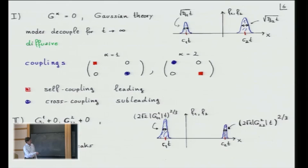The claim is that in this case, when I look at sufficiently large times, it will decouple — but now into two independent Burgers equations. The cross couplings are sub-leading. If the diagonal entries are different, the claim is two KPZ peaks. That's far from any proof — it would of course be very nice to prove such decoupling even in the nonlinear theory.